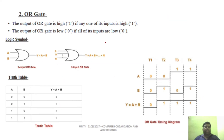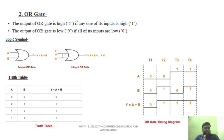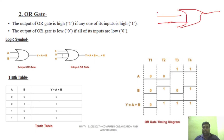Next is the OR gate. Remember the OR gate as addition. This is the OR gate symbol. It has inputs A and B, and the output is A plus B.